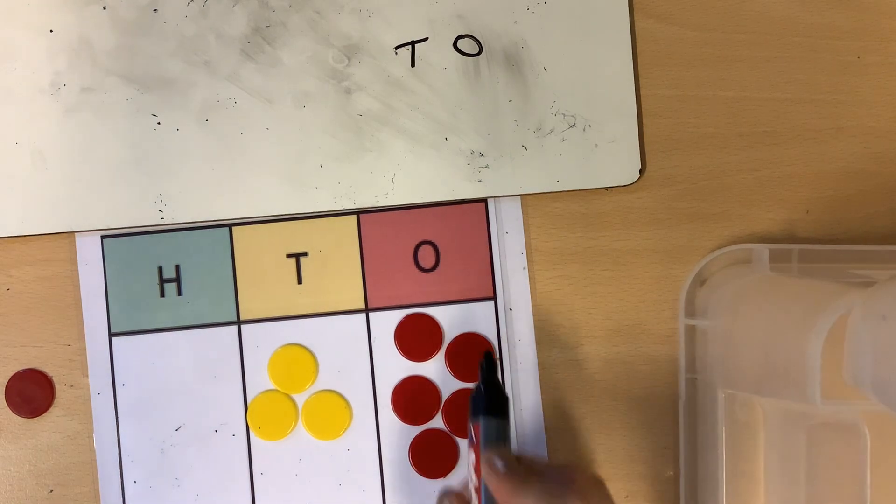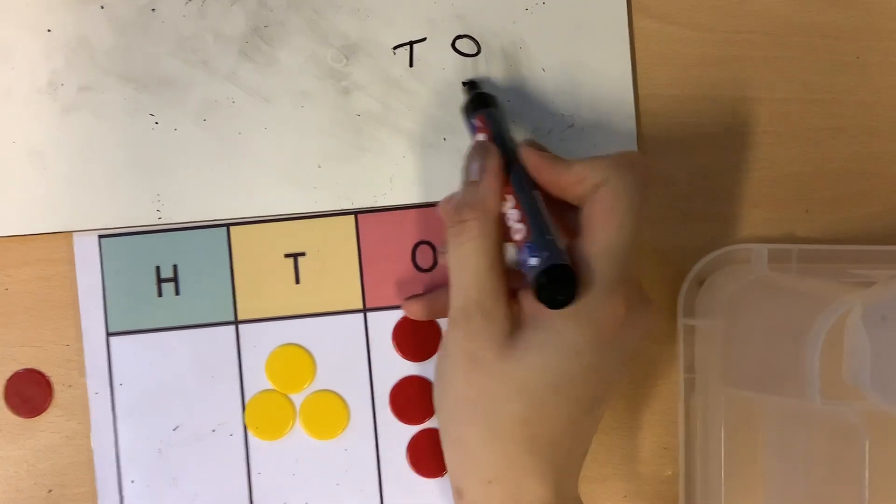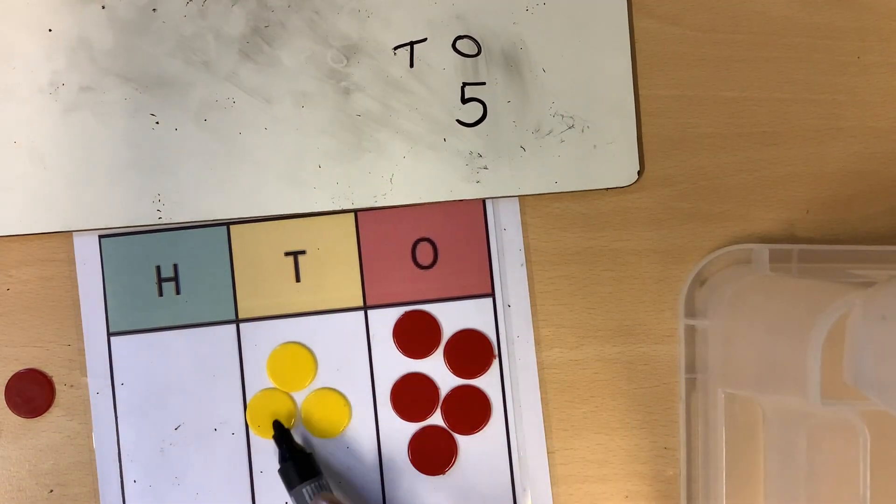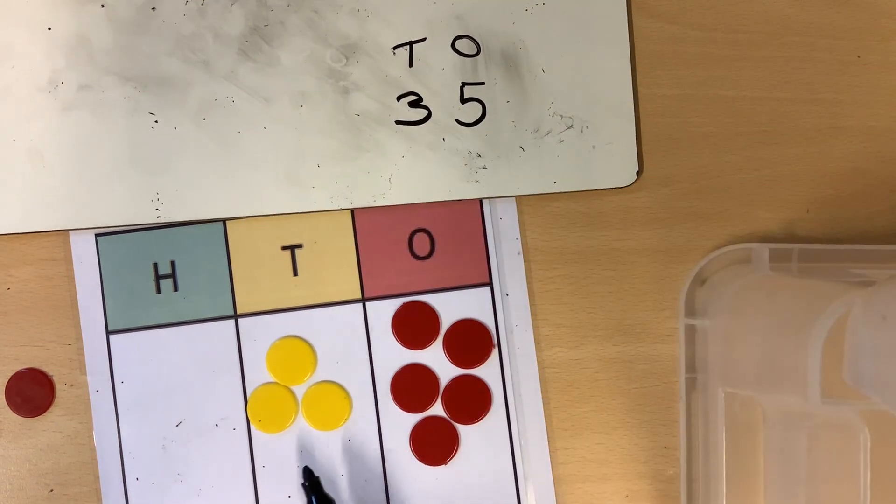How many are in this place value? 2, 4, 1 more, 5. 5 ones. How many tens? 3 tens. 37. 37.